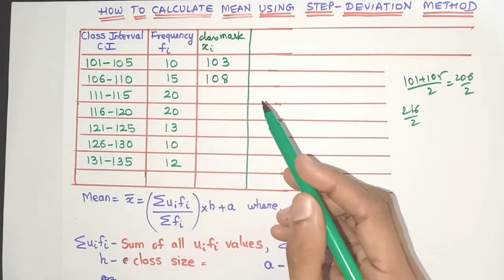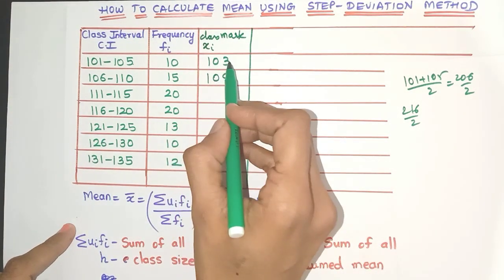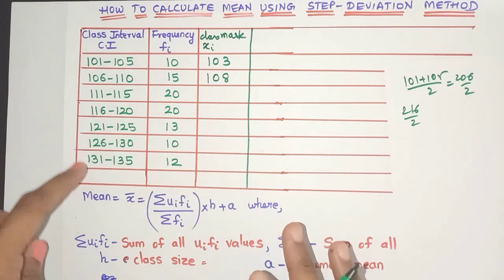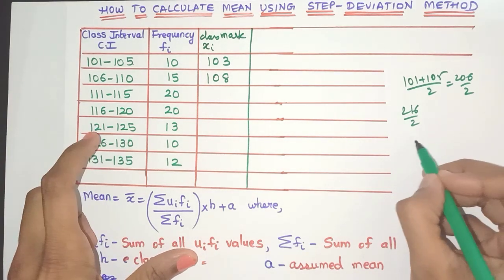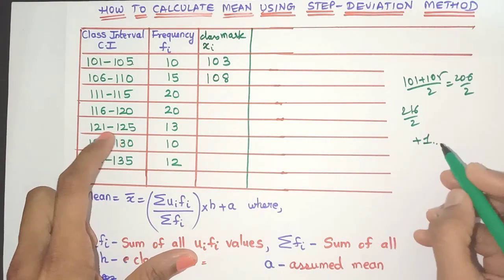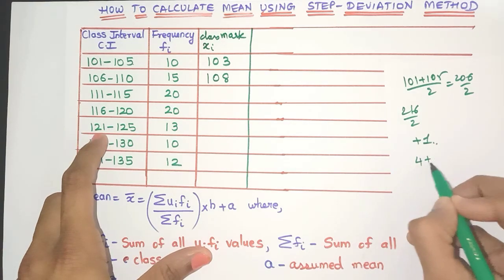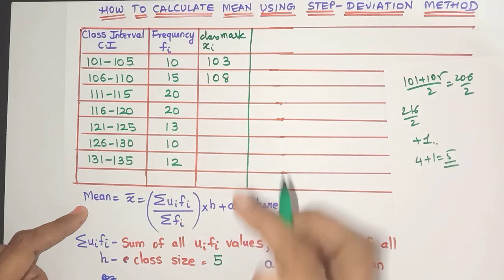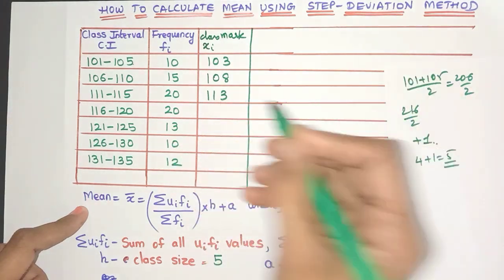Now in this way you can calculate all the other entries, but there is an easier way to calculate. All you need to do is once you find the first class mark, just add the class size to it. Now what is the class size? It is h. So any class interval, just subtract the upper limit and the lower limit and just add one to it, friends. Okay? Because this is inclusive. So 125 minus 121, you'll get 4. Just add one, you'll get 5. So the class size here is 5.